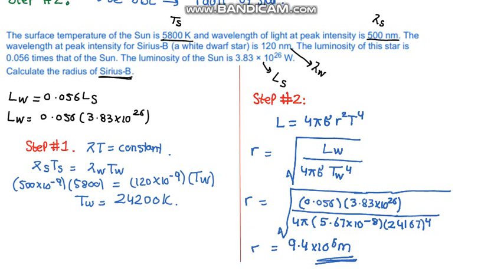So the radius of the white dwarf star is 9.4 times 10 to the power 6 meters. Do bear in mind that it is almost equal to that of Earth, but the white dwarf star is not as luminous as the Sun because of its small surface area.